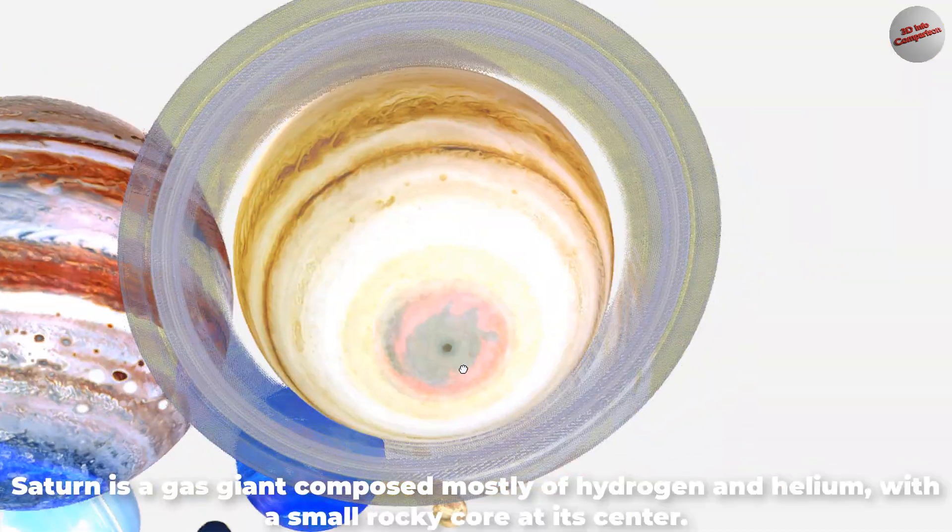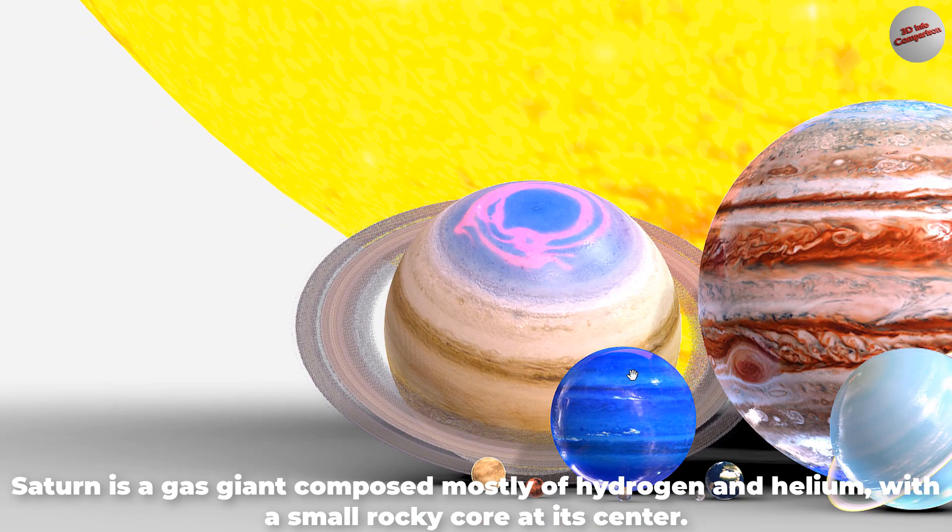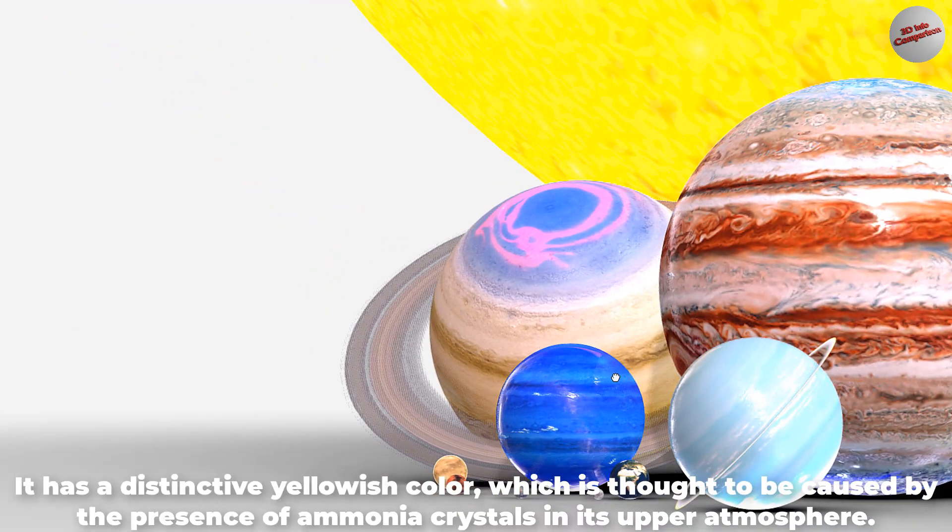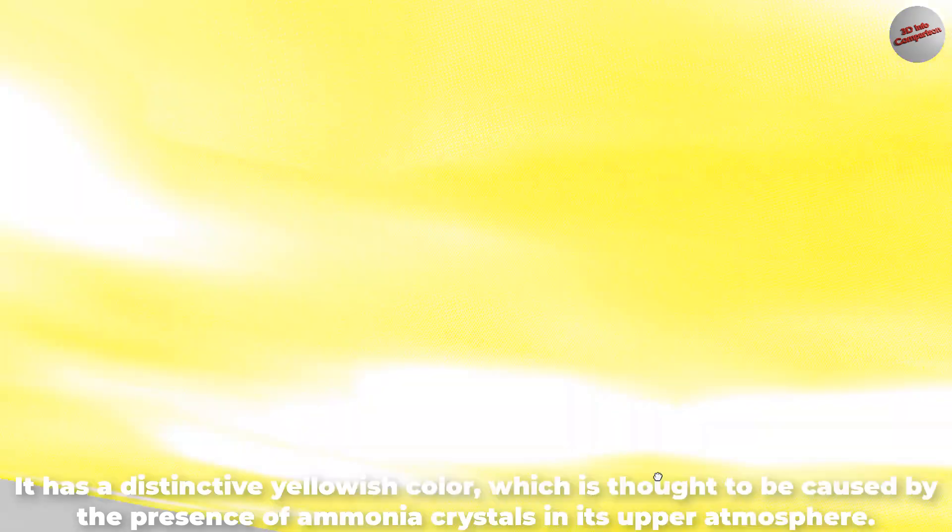Saturn is a gas giant composed mostly of hydrogen and helium, with a small rocky core at its center. It has a distinctive yellowish color, which is thought to be caused by the presence of ammonia crystals in its upper atmosphere.